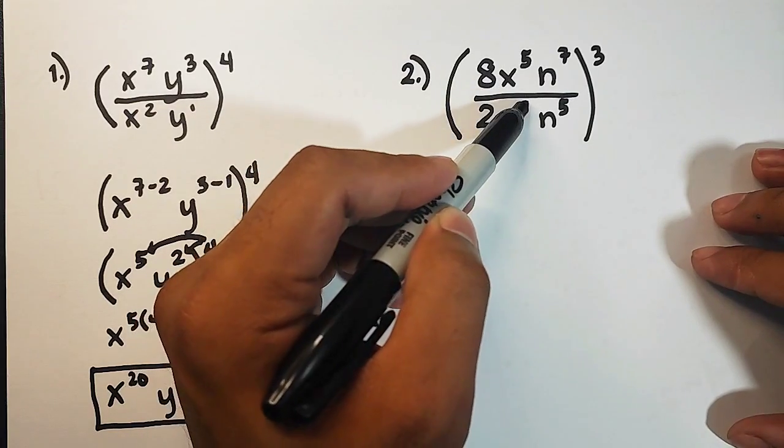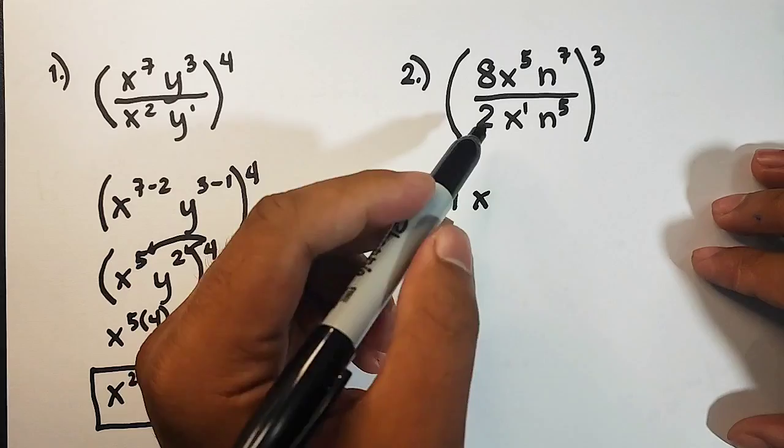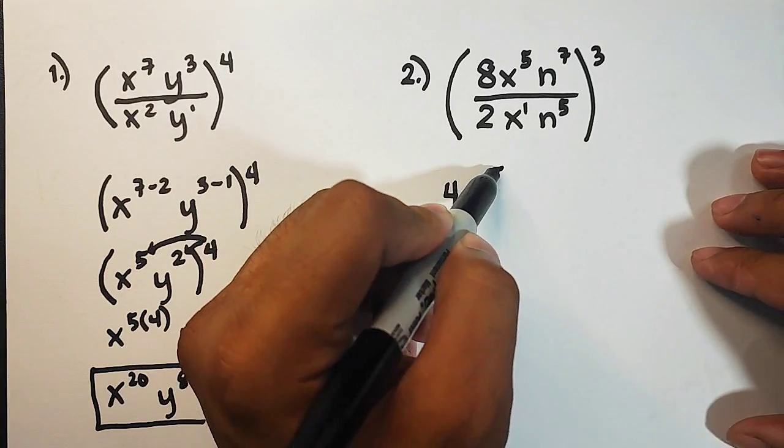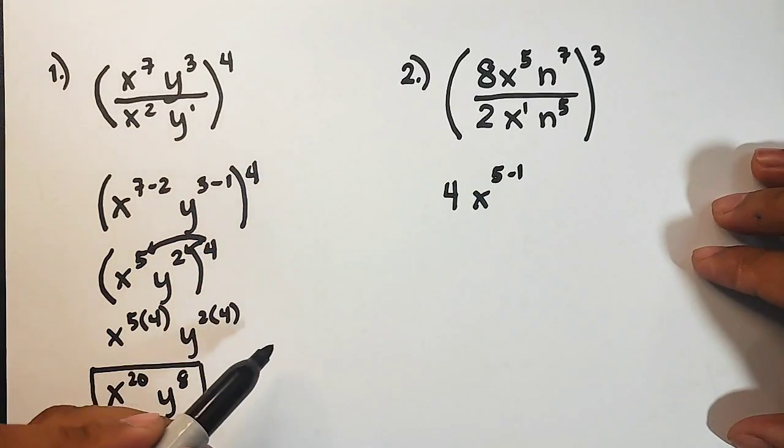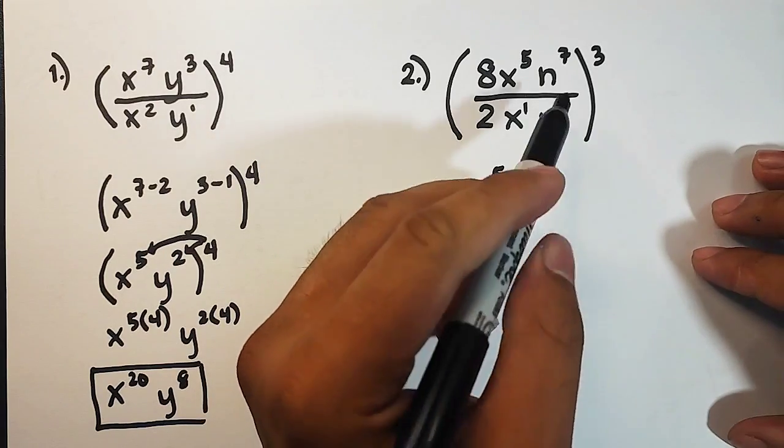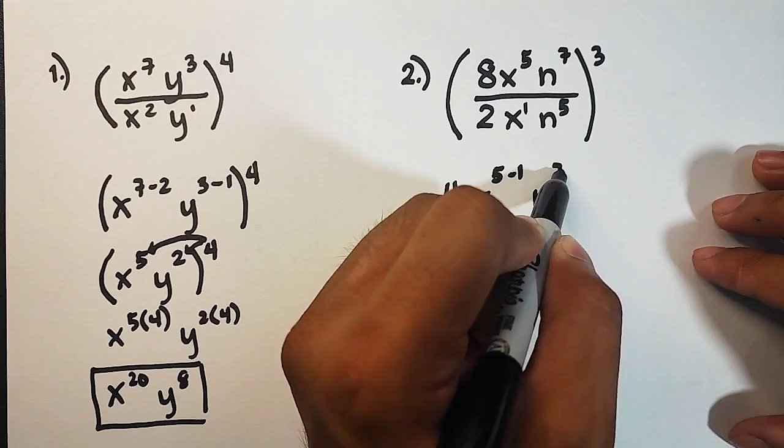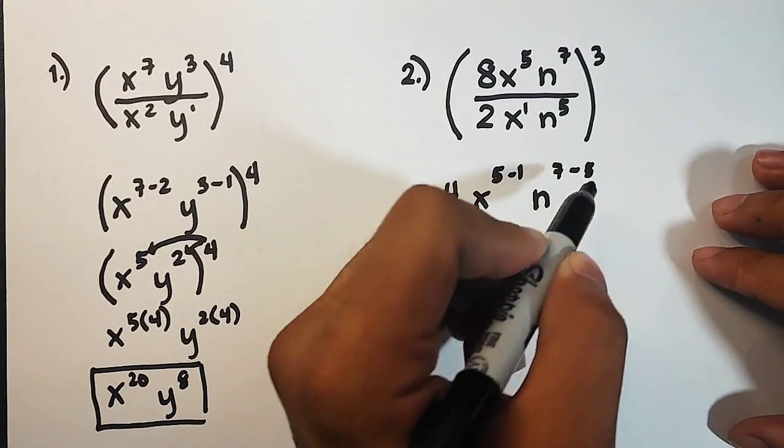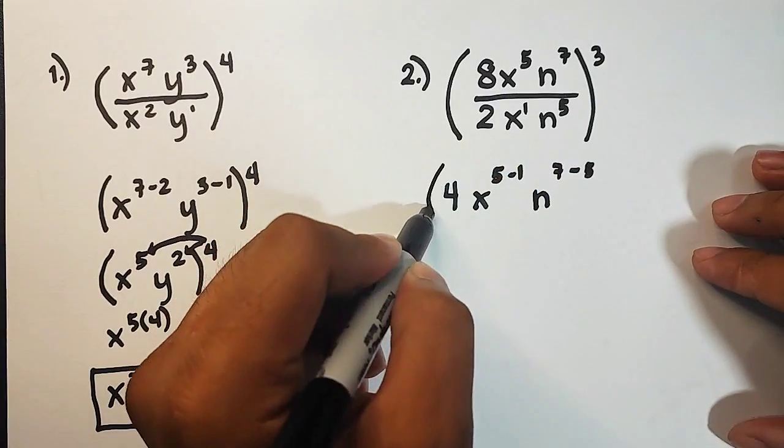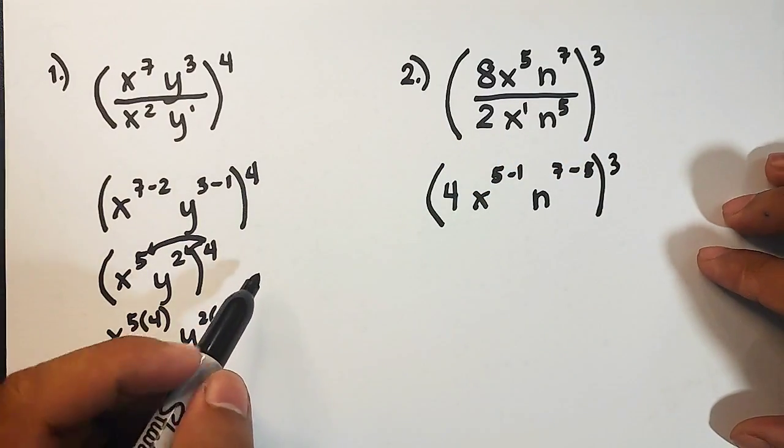For the variable, we have here the invisible 1. Copy the variable x. Subtract the exponents. 5 minus 1. For the variable n, copy the variable n. Subtract the exponents. That is 7 minus 5.